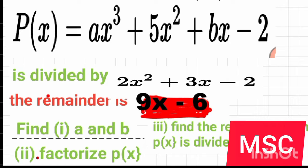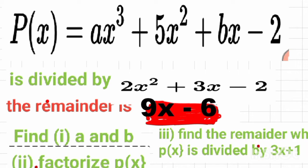Today we are looking at another polynomial equation — a cubic equation. This is the most complex cubic equation you will ever come across. P of x equals ax³ plus 5x² plus bx minus 2, divided by 2x² plus 3x minus 2. The remainder is 9x minus 6. Find a and b.